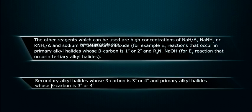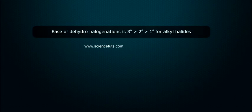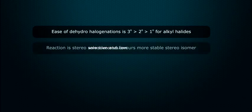and primary alkyl halides whose beta carbon is tertiary or quaternary. Ease of dehydrohalogenation is tertiary greater than secondary, greater than primary for alkyl halides.